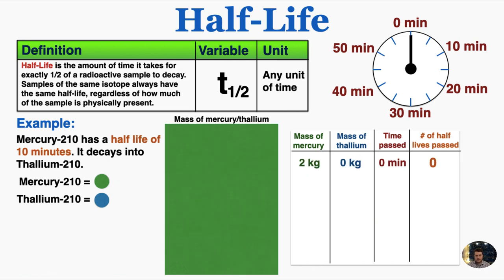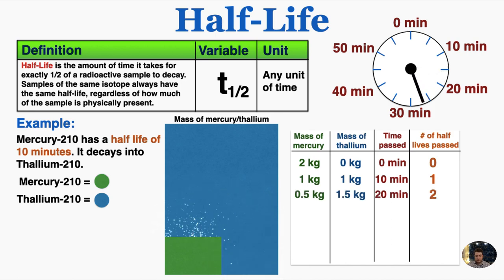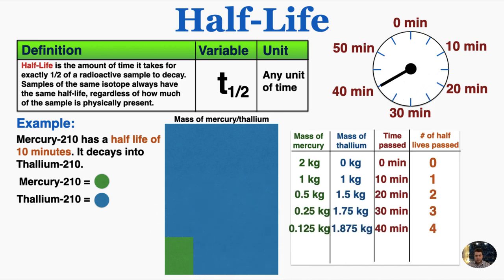Another thing you'll notice is that it doesn't matter how much mass we start with. If the substance has a half-life of 10 minutes, after 10 minutes pass, it's always going to have half of whatever that starting substance was. So here I started from 2 kilograms, and you can see these masses are very different from when I started with 64, but the same thing is happening. After every 10 minutes we have half of the mercury that we had before, and the rest has become thallium.